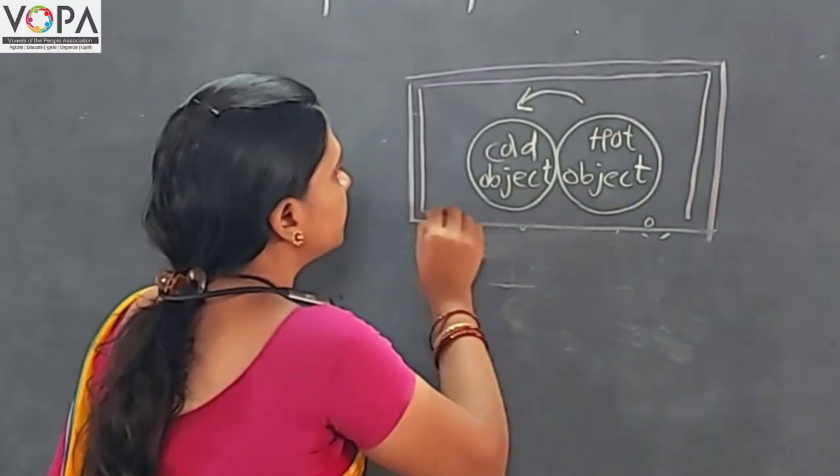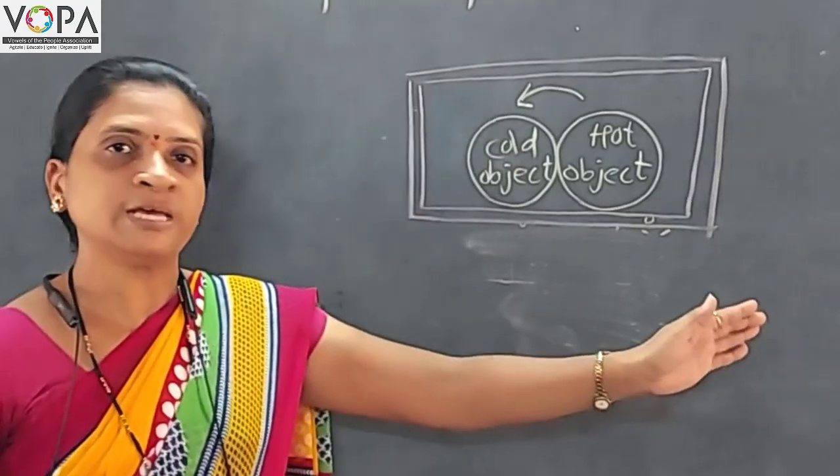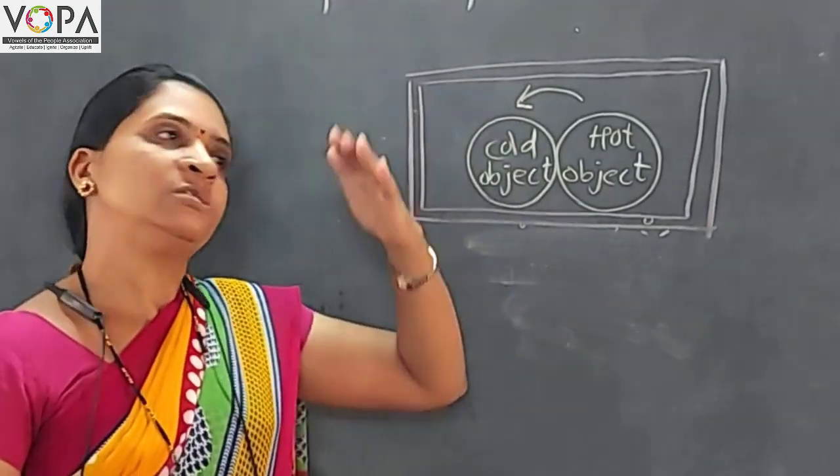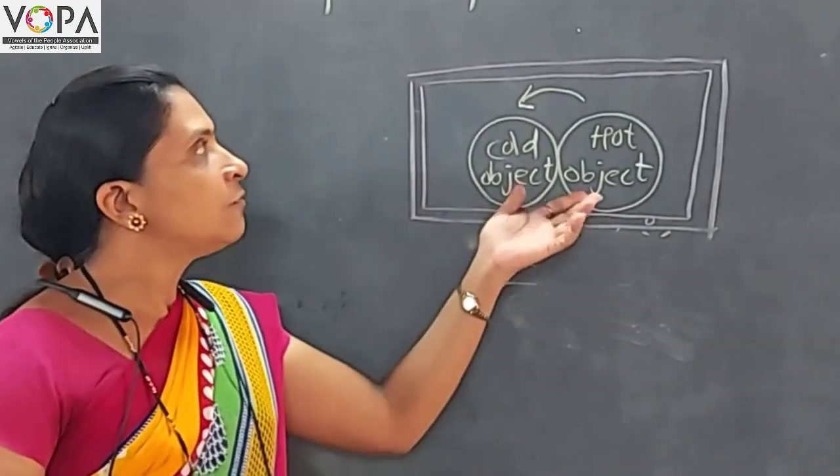What happened if we use this heat resistant material? Heat cannot pass go outside from this hot object and heat also does not enter inside this box. So what happen here?